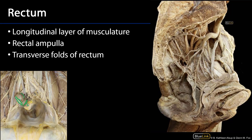We can see the rectum in a sagittal section of the pelvis. The rectum here is posterior to the vagina. We can see some transverse folds of the rectum — typically there are three transverse folds. The distal portion of the rectum tends to be more dilated, and this region we would call the rectal ampulla.